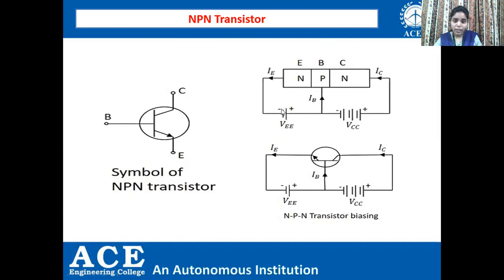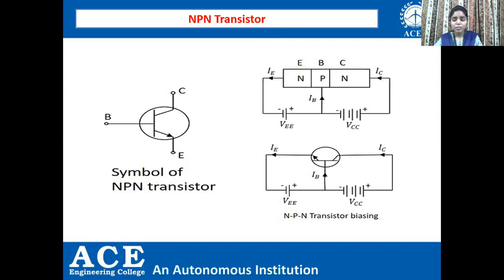A negative terminal of the battery is given to the emitter and positive to the base - this is VEE. For the collector and base, we have given VCC where negative is connected to base and positive is connected to the collector terminal. We should now understand how the currents IE, IB, and IC flow in their respective directions.